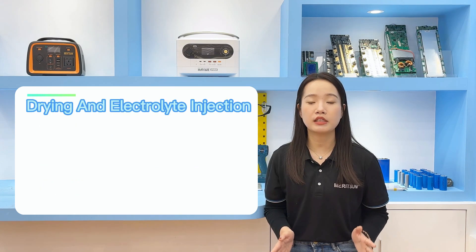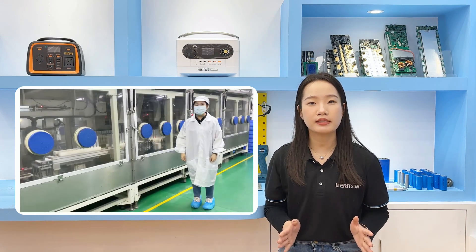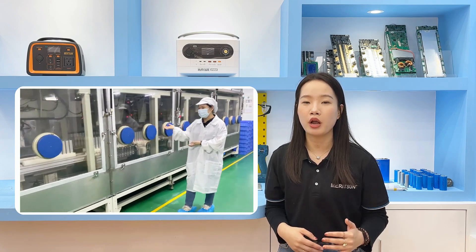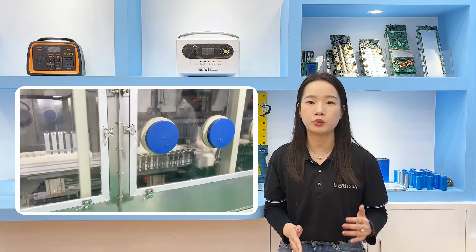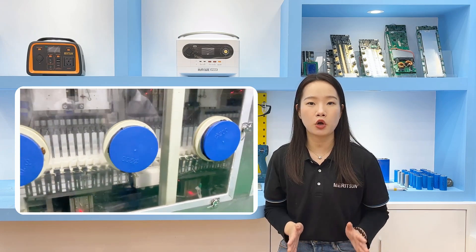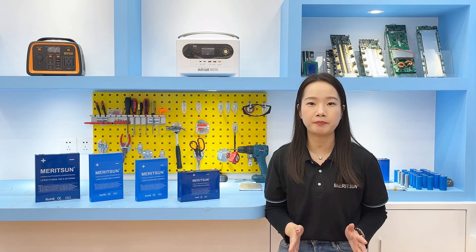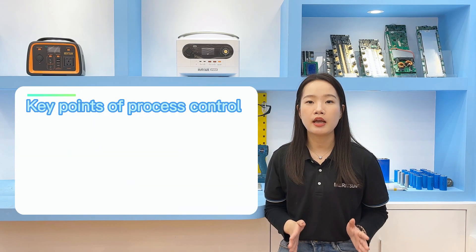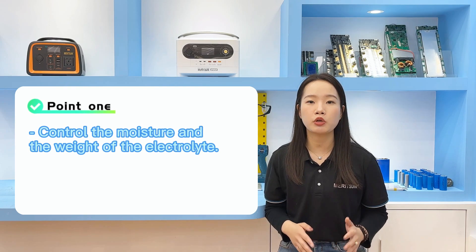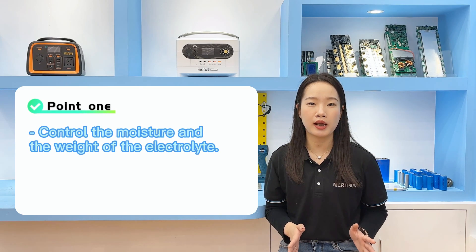The fifth process is drying and electrolyte injection. This process is carried out in a drying room because moisture will cause the electrolyte to decompose and release toxic gases. The electrolyte material is lithium hexafluorophosphate. The most important quality control points are to control moisture and ensure the correct weight of the electrolyte.